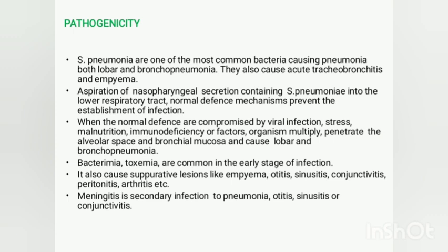Lobar pneumonia involves inflammation of alveolar spaces and may affect the lobes of the lungs. Bronchopneumonia involves inflammation of bronchioles and is a fatal condition in immunocompromised hosts. Since Streptococcus pneumoniae is normal flora of the human throat, nasopharyngeal secretions containing it can enter the lower respiratory tract during breathing.